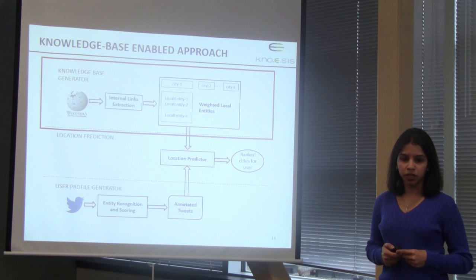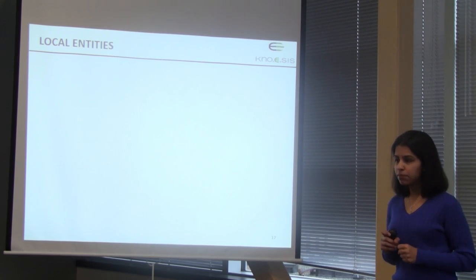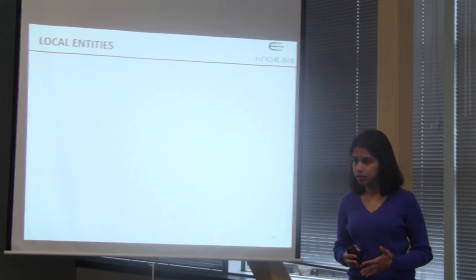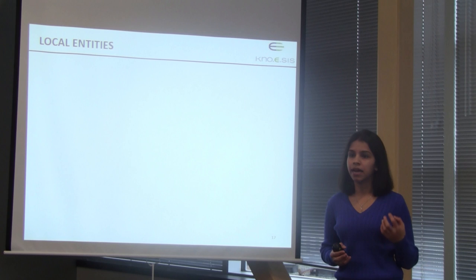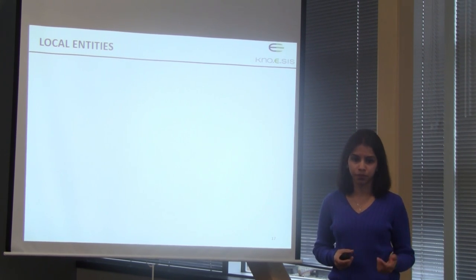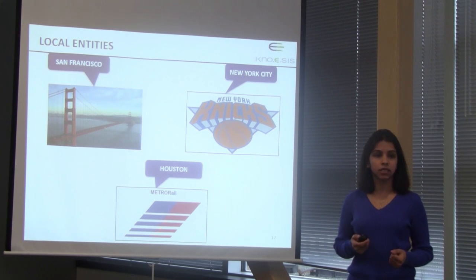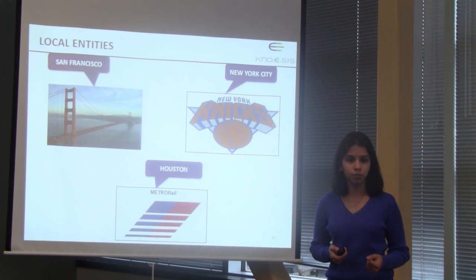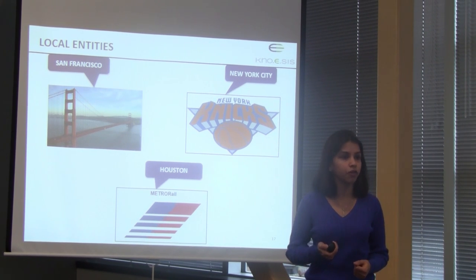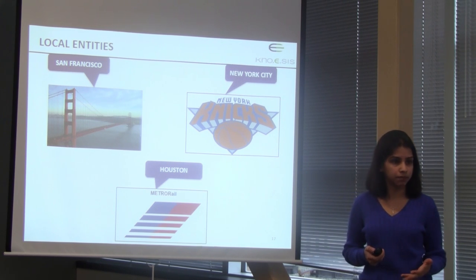I'll talk about the Knowledge Base Generator now. Similar to the idea of local words, we propose the concept of local entities — entities that have a strong association with a particular location. For example, Golden Gate Bridge can be considered local with respect to San Francisco. New York Knicks can be considered a local entity with respect to New York City. We extract local entities for each city from Wikipedia.